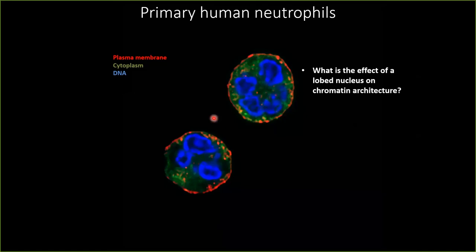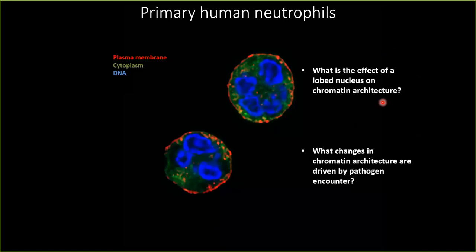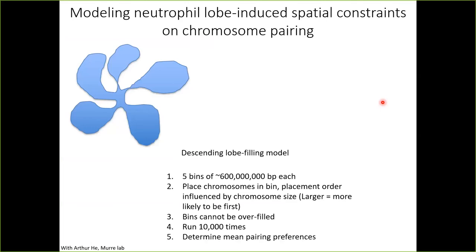For this talk, I have two main questions. First, what is the effect of the acquisition of this lobed nucleus on chromatin architecture? And second, what changes in chromatin architecture are taking place in response to a pathogen encounter, and what is the mechanism of these changes? Essentially, what is the effect of these spatial constraints due to the lobes on the organization of chromatin in a neutrophil compared to a non-polymorphic nuclear cell?